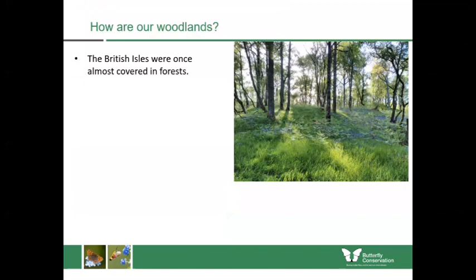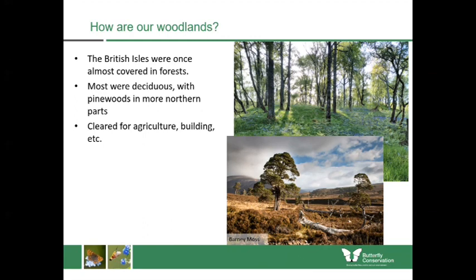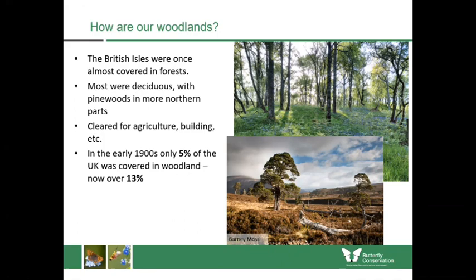How are woodlands doing? The British Isles were once almost entirely covered with forests, but most are now gone. In the early 1900s only about 5% of the UK remained covered in woodland. That number is now 13%, but unfortunately about half of that is non-native Sitka spruce plantations grown for wood and pulp — not native to this country. So while we are increasing woodland cover, a lot of it isn't good for wildlife.